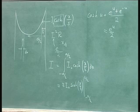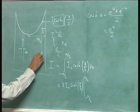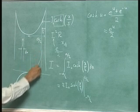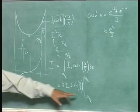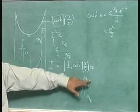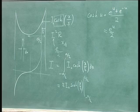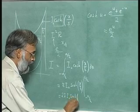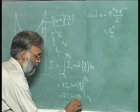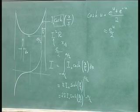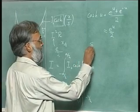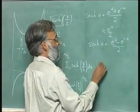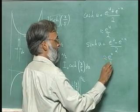Sinh is an odd function, so at a/2 it is large and positive and at minus a/2 it is large and negative. Subtracting a large negative from a positive gives twice the large positive number, so it becomes 2 delta i_naught sinh(a/2 delta). Sinh(u) equals (e^u - e^{-u})/2, which is approximately e^u/2 for large u.